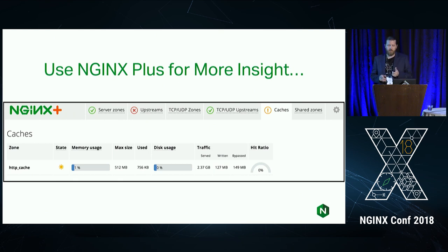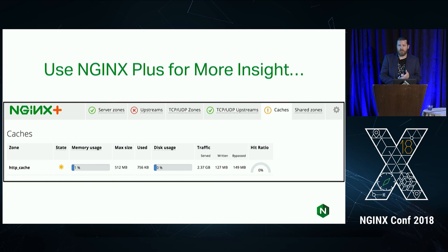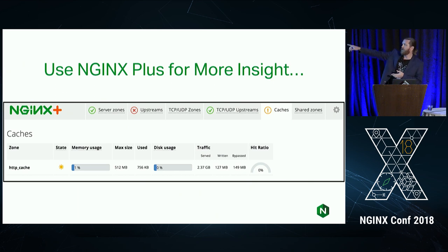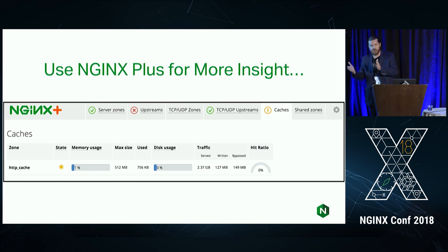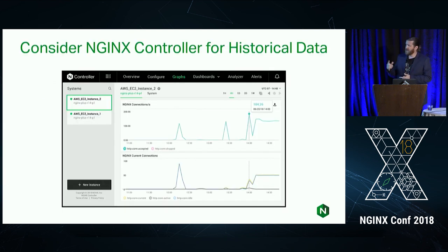If you're using NGINX Plus, we have an added API with metrics. We keep track of the state of the cache — whether it's warmed up or cold. It tells you how much of the key-value memory zone is being used, the size of the cache and how much is being used, and most importantly the amount served, written, and bypassed, giving you that hit ratio. Obviously the higher the ratio the better. If you're at 50% ratio, you're likely wasting 50% of your cache disk. You can tweak the minimum uses setting to improve that ratio.